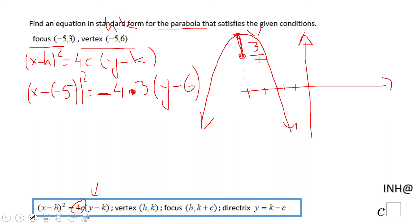So we're going to end up with (x + 5)² = -12(y - 6).